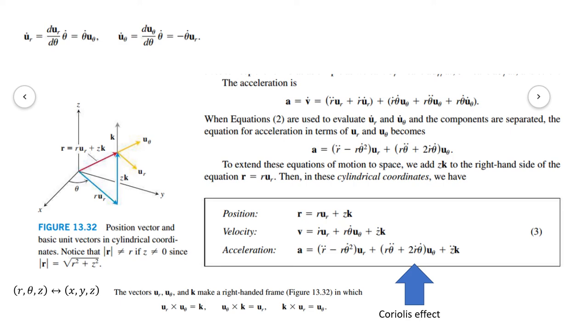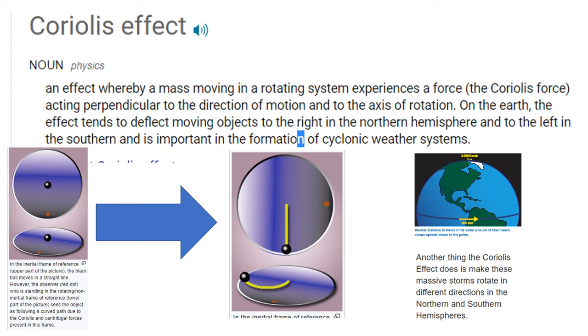Okay, so the Coriolis effect is an effect whereby a mass moving in a rotating system experiences a force acting perpendicular to the direction of motion and to the axis of rotation. On the earth, the effect tends to deflect moving objects to the right in the northern hemisphere. Think about when you flush your toilet, the water doesn't go just straight down, it swirls, and it swirls to the right in our hemisphere. In the southern hemisphere, it swirls to the left. And the reason is the Coriolis acceleration. And it's important in the formation of cyclonic weather systems. And in fact, you'll find that the swirl of these systems is to the right in the northern hemisphere, and is to the left in the southern hemisphere.